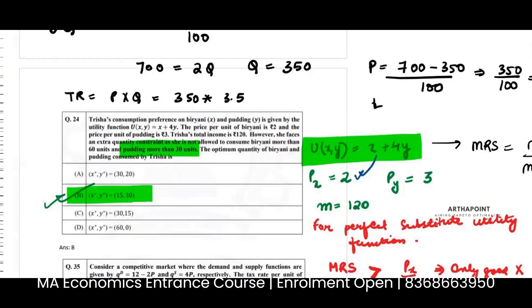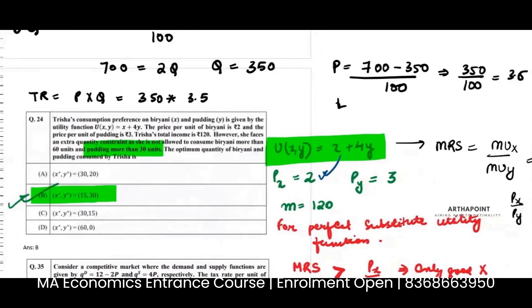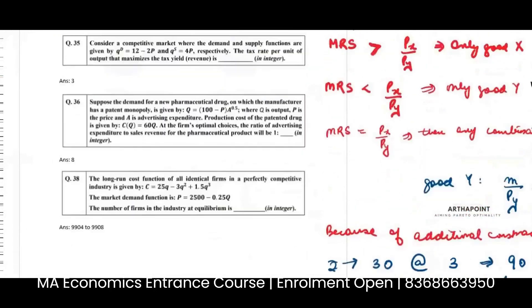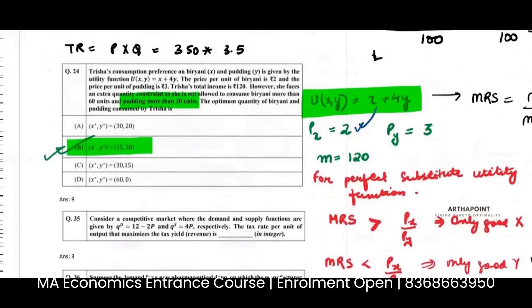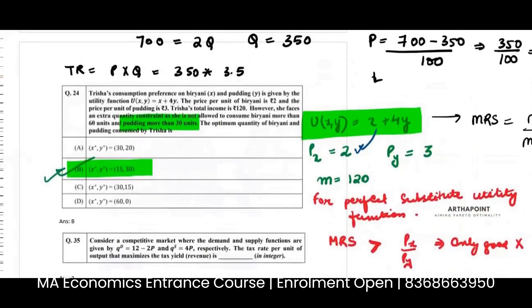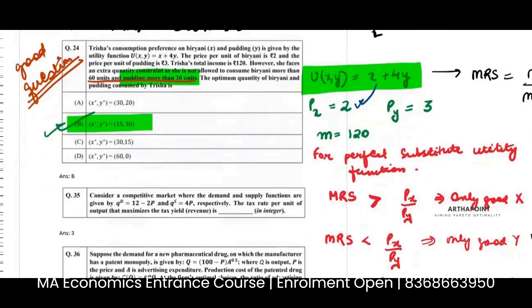But then also you can calculate the entire answer and you can say that it will be 15, 30. A very good question in fact. Very, very good question for practice. It uses two concepts simultaneously. One, it uses the concept of substitute goods. And second, what happens when you change your budget simultaneously? When you put a constraint on your consumption in the budget. So good question.